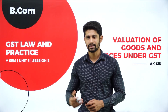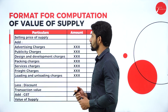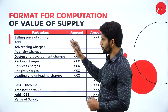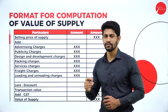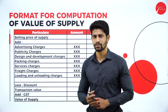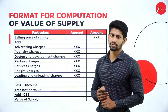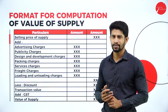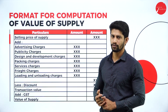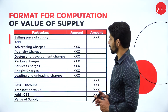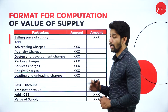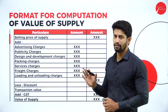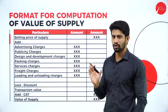This is the format for computation of value of supply of goods. If you follow and learn this format, it is very easy to score 15 marks in your exam — you will compulsorily be asked a 15-mark question from this concept. The format uses columns: particulars and amount, or you can use three columns — particulars, amount, and amount — for convenience.